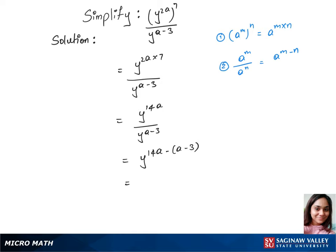This gives us y power 14a minus a, minus times minus is plus 3. This gives us y power 13a plus 3. That's our final answer.